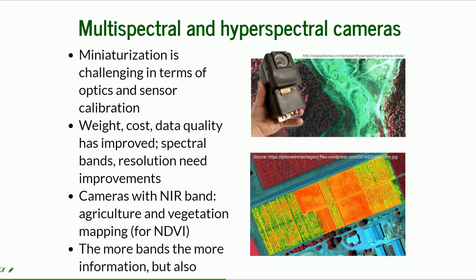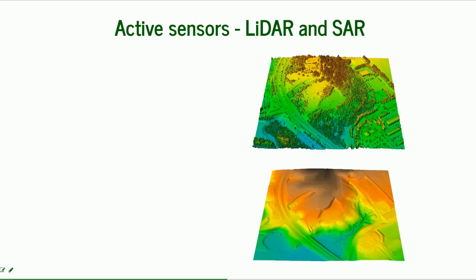The more bands, the more information about the area — but also the higher the sensor cost and the more sophisticated technology required. There are significant trade-offs in combining high spectral resolution with mounting on a small UAS that can only lift so much.